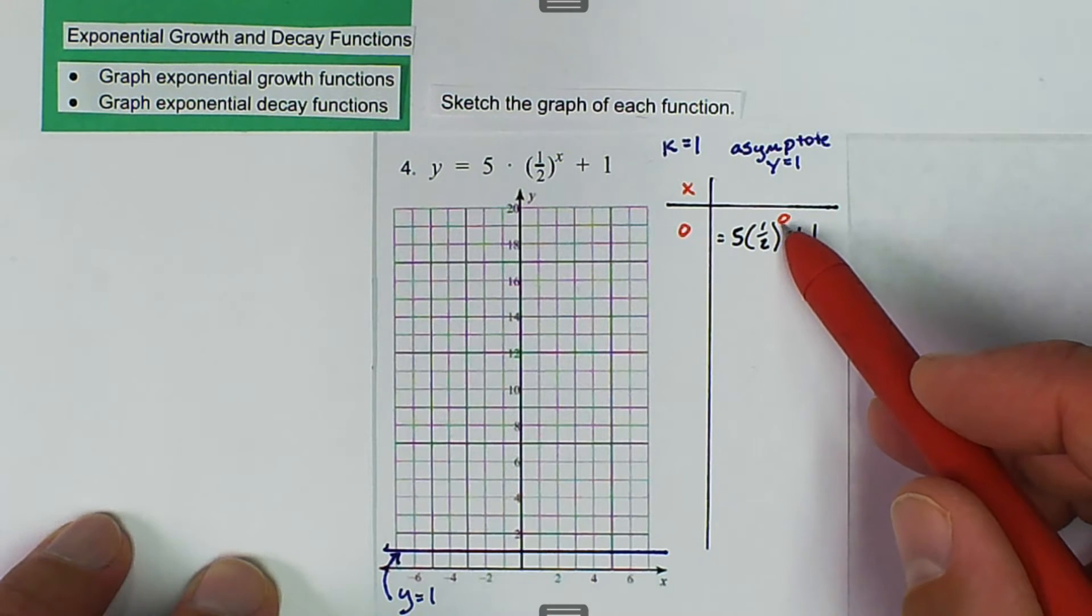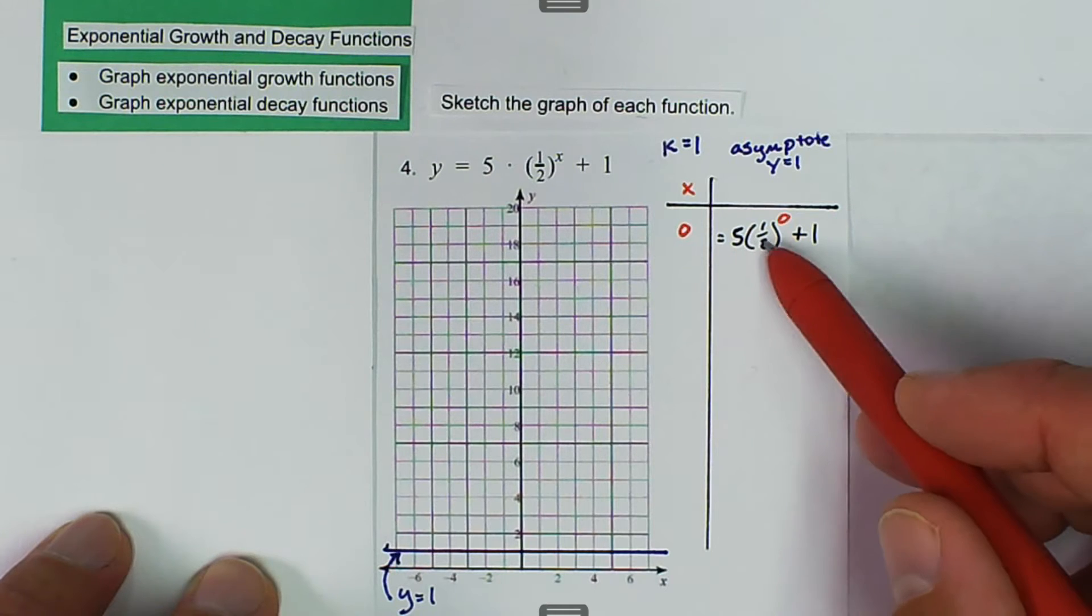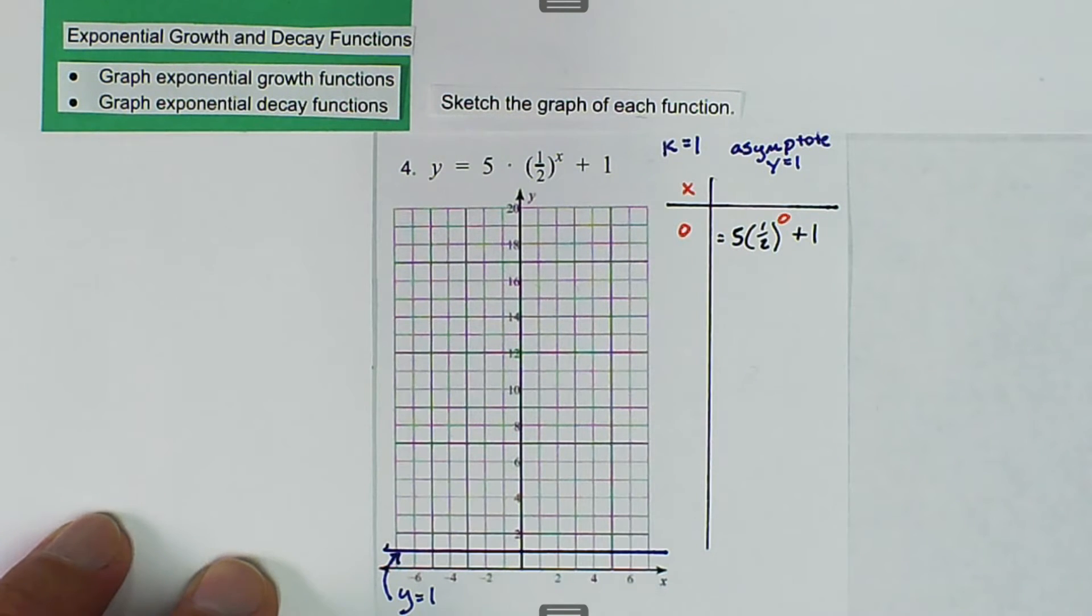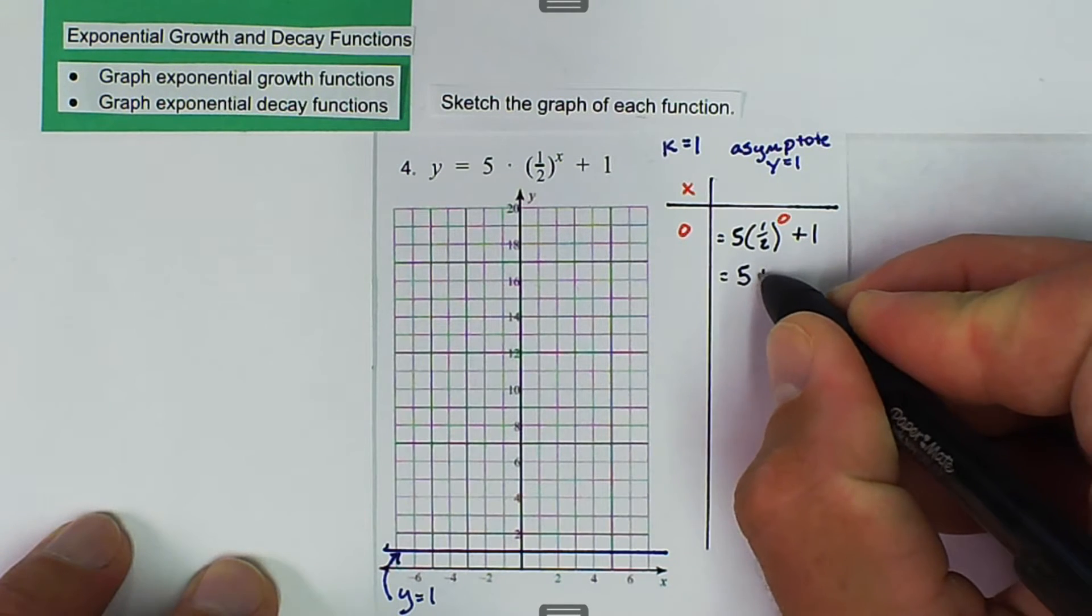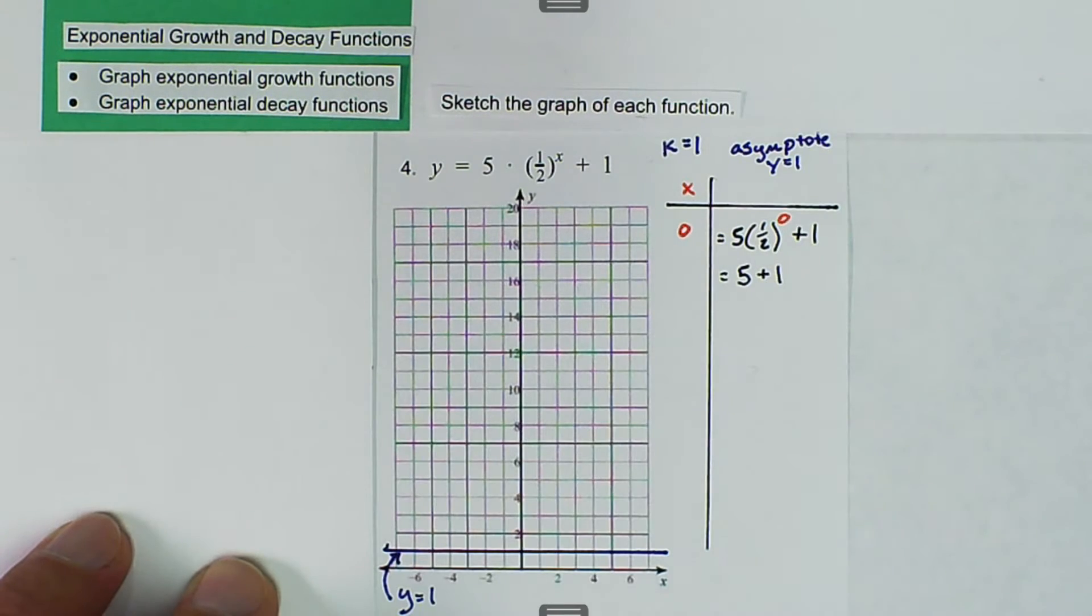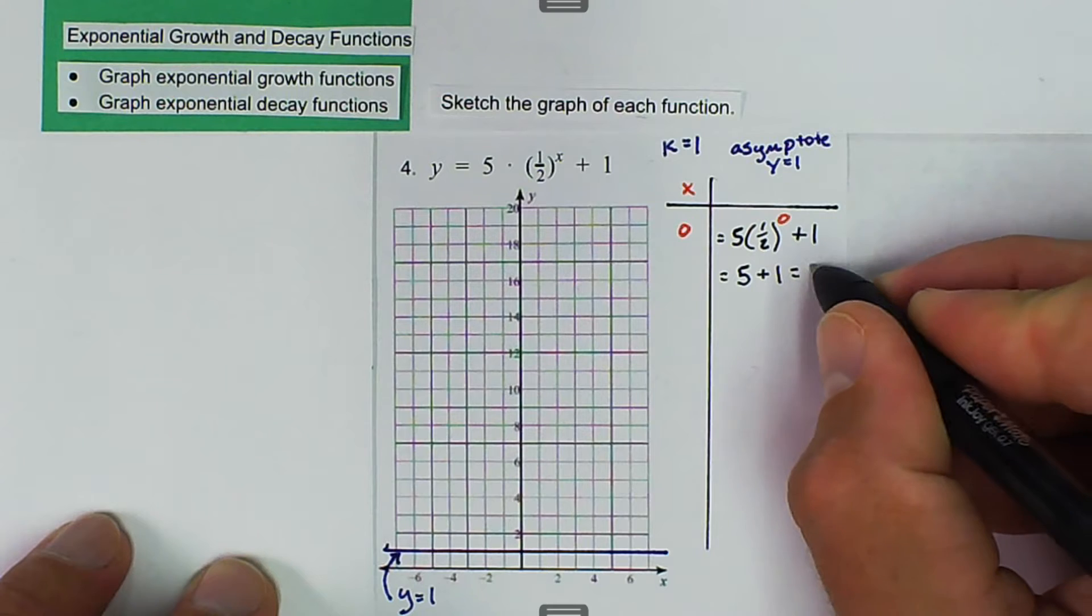So 1 half to the 0 power is 1. 5 times 1 is 5. So then we get that's equal to 6.